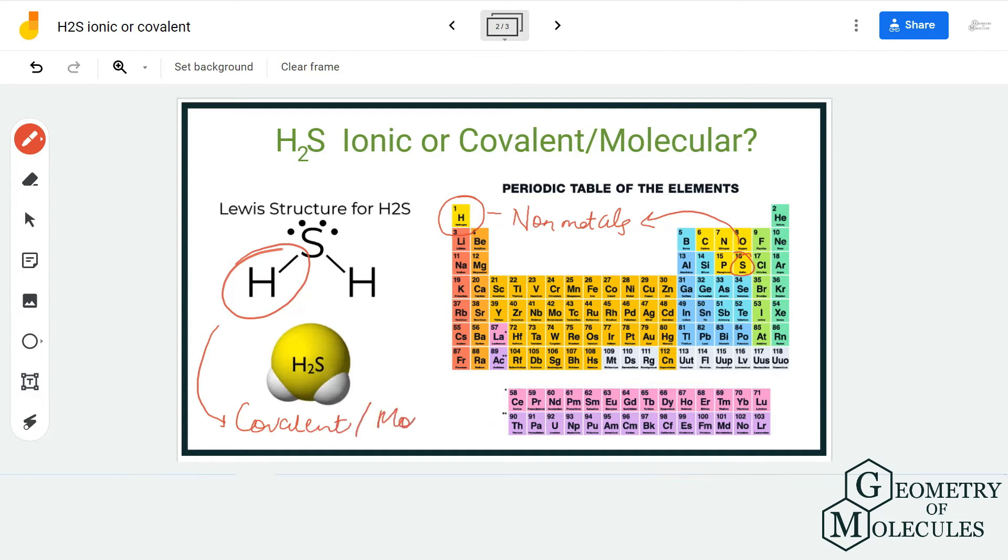or hydrogen sulfide, is a covalent compound or a molecular compound. Generally, the molecules that have one non-metal and metal are ionic, but here, as you can see, both of these are non-metals in the periodic